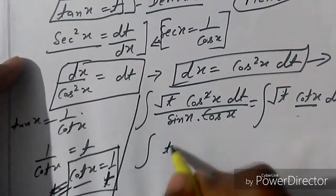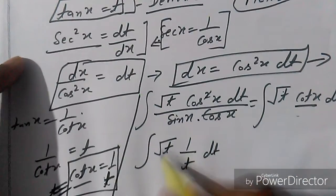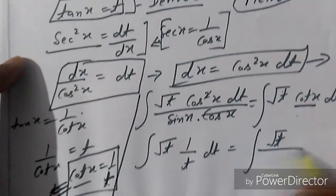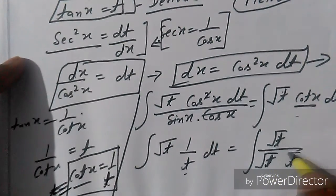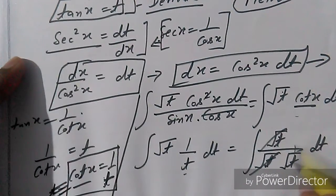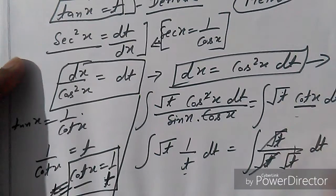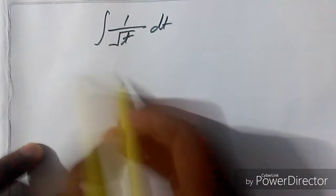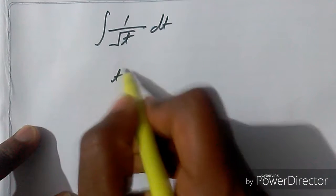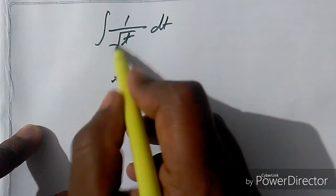After substitution the integral becomes t times root of (1/t) dt. We rewrite √t times (1/t) as t^(1/2) times t^(-1), which simplifies to t^(-1/2), giving us the integral of 1/√t dt, or t^(-1/2) dt.